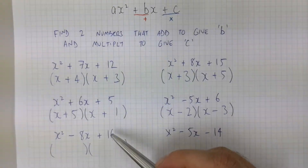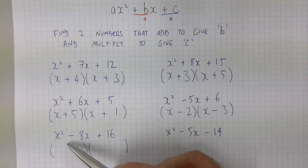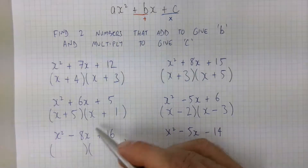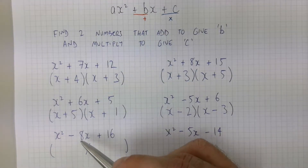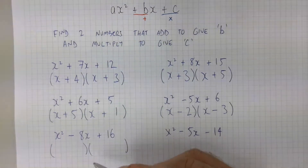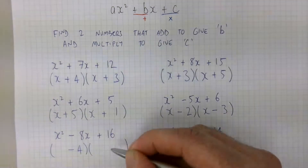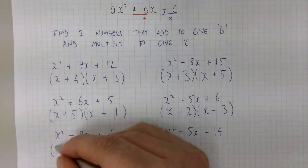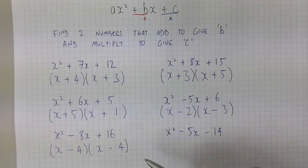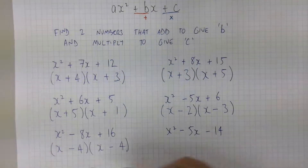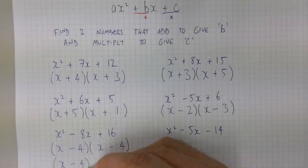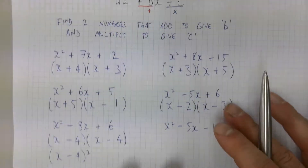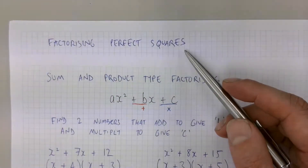Similarly, set up two brackets where the two numbers multiply to give positive 16 but add to give minus 8. You might notice that 16 is a square number: −4 + −4 = −8 and −4 × −4 = positive 16. So we get (x − 4)(x − 4), which we can simplify further to (x − 4)², and this is actually an example of factorizing a perfect square.